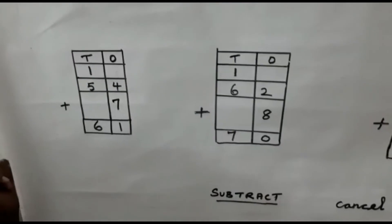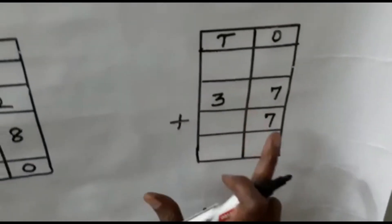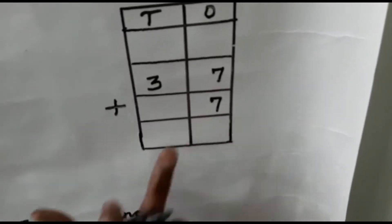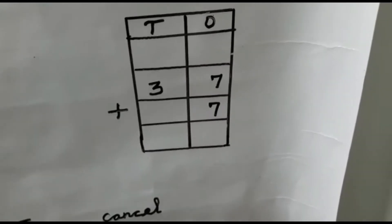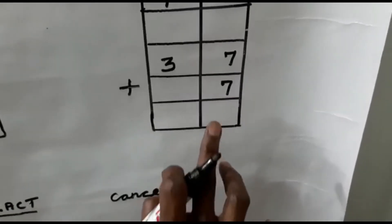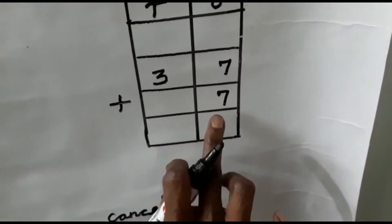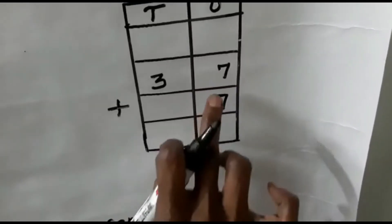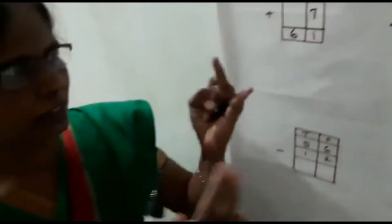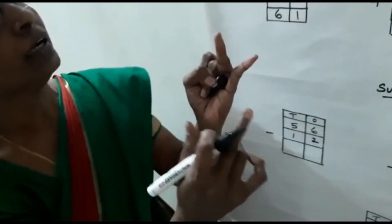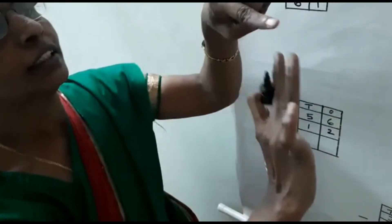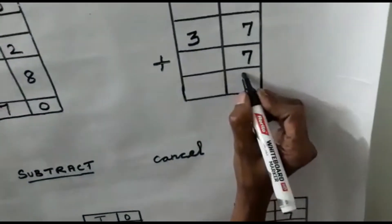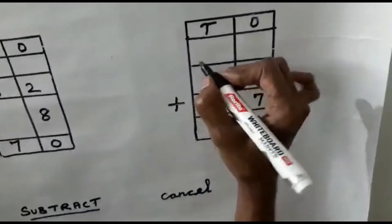Now here we are going to see: ones side 7, another ones side 7, then tens side 3. So 37 plus 7 you are going to add. Now 7 and 7 — since both are the same number, keep one 7 in your mind and the other 7 on your finger. After 7: 8, 9, 10, 11, 12, 13, 14. So 14 means write 4 in the ones place and carry 1 to the tens side.